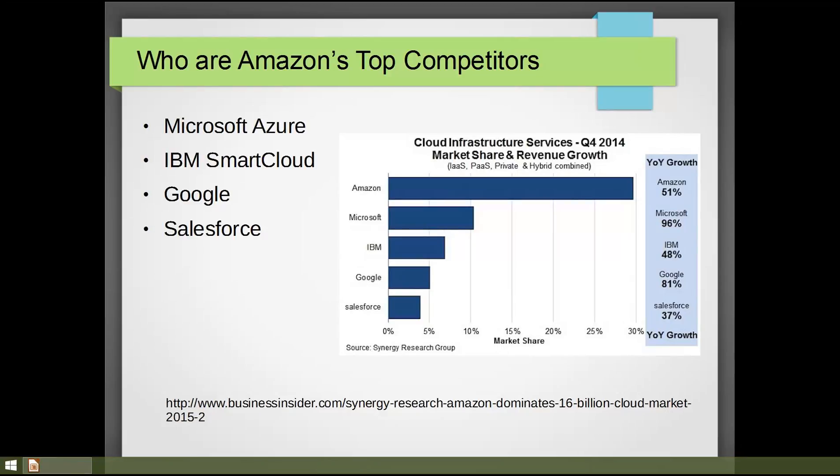Some companies like Google and Netflix have their own internal clouds that are much bigger than others because they've got the scale to justify it. AWS has only been around about 10 years.